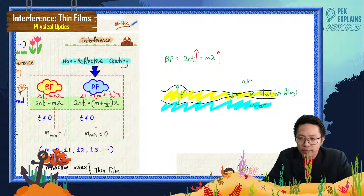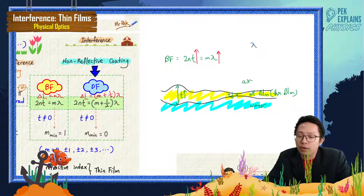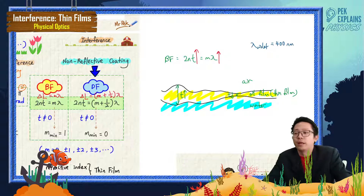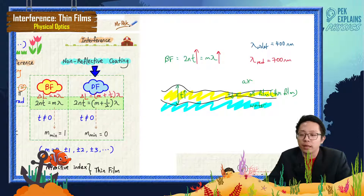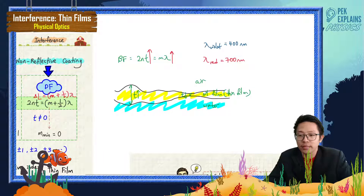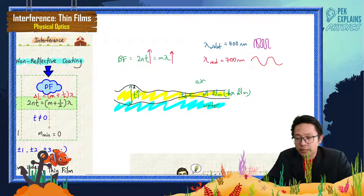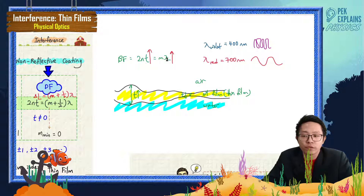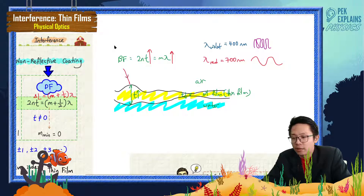The wavelength for violet light is actually the shortest, about 400 nanometers, whereas the wavelength for red light is the longest, about 700 nanometers. So the thickest part of the film will reflect light with the longest wavelength. That's why at the thickest part you can see red light.